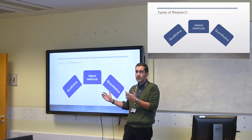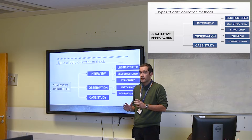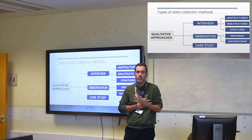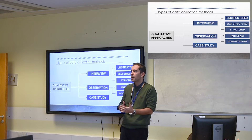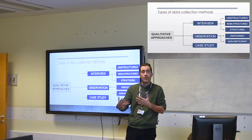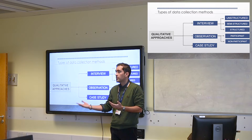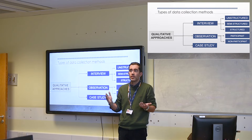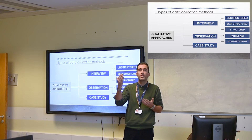Qualitative research is when you're trying to find out about people's opinions and feelings — how they feel about something — and you want to know it in a bit more detail. For example, I can ask you to rate the usefulness of the library from one to five, and that will just give me a number.